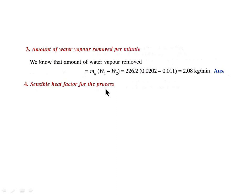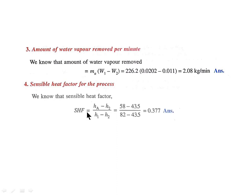The sensible heat factor (SHF) for the process is equal to (HA − H2) / (H1 − H2), which represents sensible heat divided by total heat. By putting the various values of enthalpies into this formula, we get SHF = 0.377. Thank you.